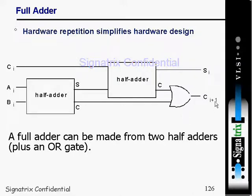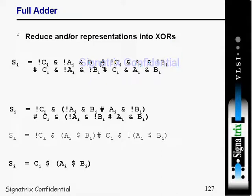You then perform an OR operation on the two carry-outs to get the final carry output. This is how you implement a full adder using two half adders. A full adder can be made from two half adders plus one OR gate — that is the total hardware required.